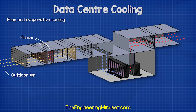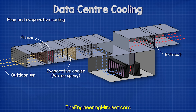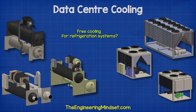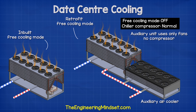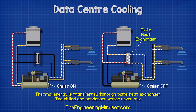Newer data centers built in cooler climates do not use refrigerants — they instead use free and evaporative cooling. In this design, outdoor air is sucked in through some filters, evaporative coolers spray water into the airstream to cool and humidify it, and the air flows directly into the server room with the hot exhaust air being separated and extracted back out to the atmosphere. Data centers with refrigeration systems can also make use of free cooling when the outdoor air is cool enough. For example, an auxiliary air-cooled condenser can be fitted which uses fans to remove as much thermal energy as possible from the condenser water before it reaches the chiller. Other designs allow the chiller to be bypassed altogether, with the chilled water exchanging thermal energy to the condenser water via a plate heat exchanger — but this only works when the outdoor air is cool enough.